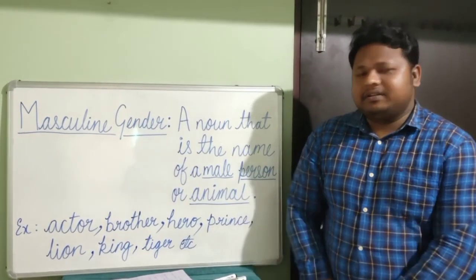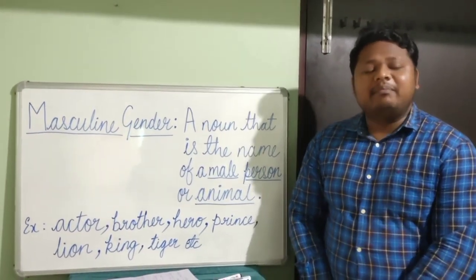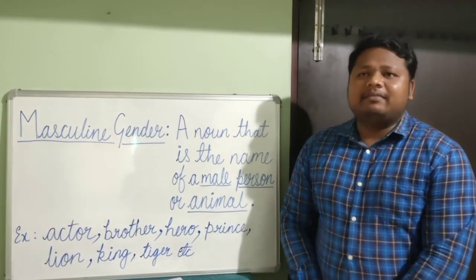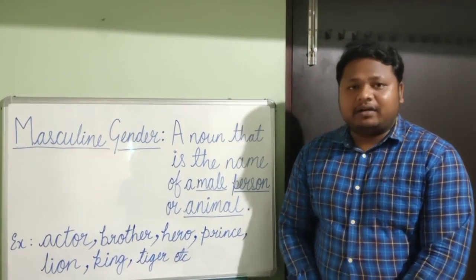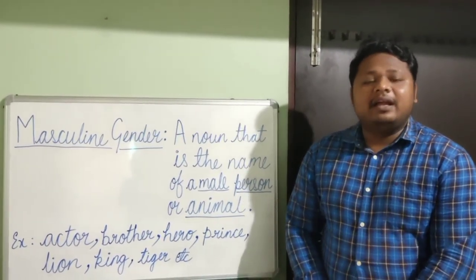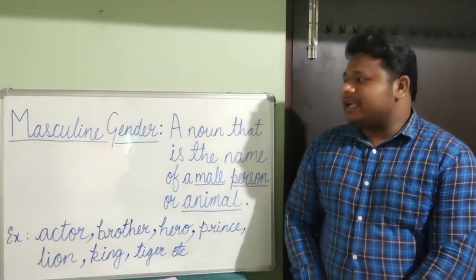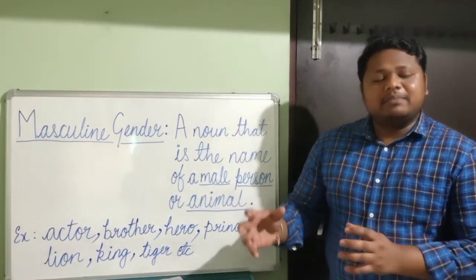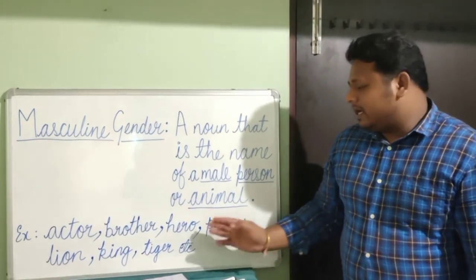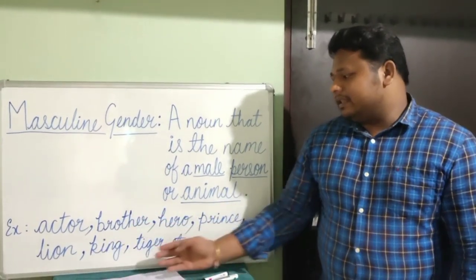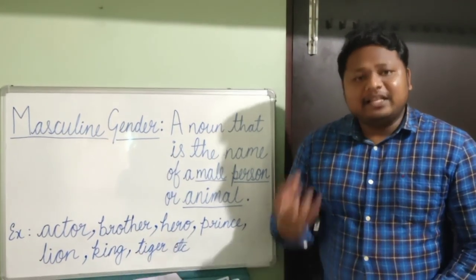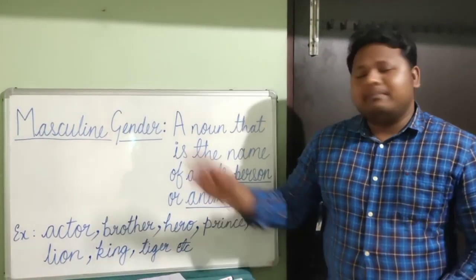Masculine gender: a noun that is the name of a male person or animal is called masculine gender. Male persons include brother, uncle, father, and grandfather. Male animals include tiger, lion, and horse. Examples of masculine gender nouns include actor, brother, hero, prince, lion, king, tiger, etc. All these nouns indicate a male, so they are called masculine gender.